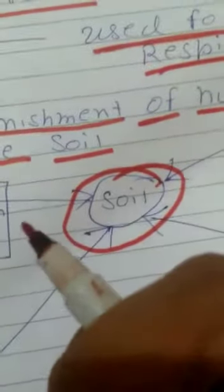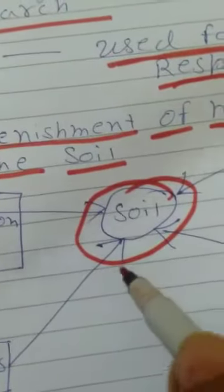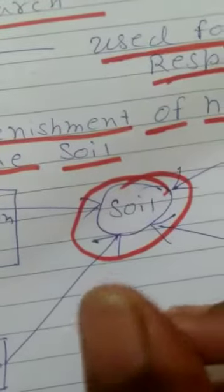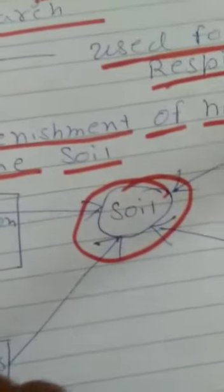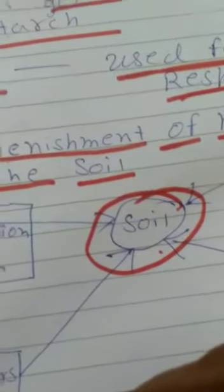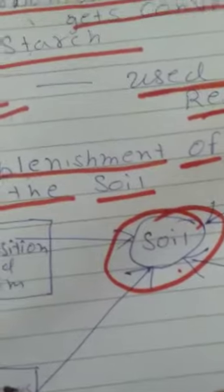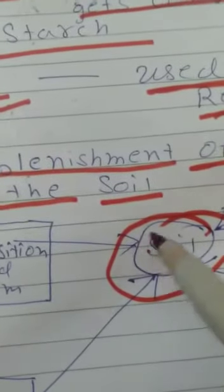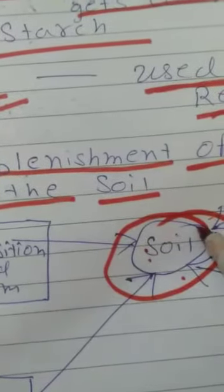So let us learn about it. Plants grow in the soil and require nutrition for their growth, just as we also require nutrition. There are different sources from where the nutrition is prepared in plants. How is this nutrition present and how does it get supplied to the plants?